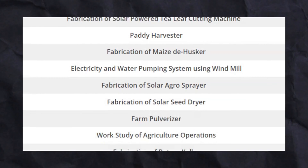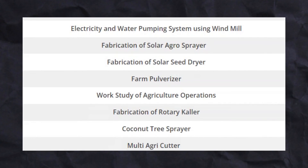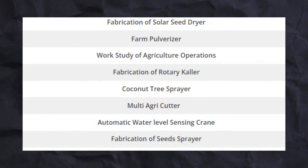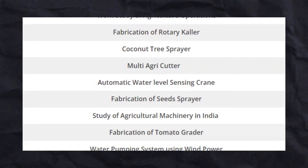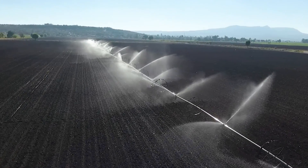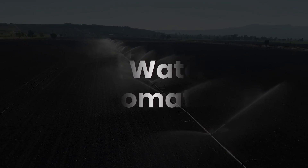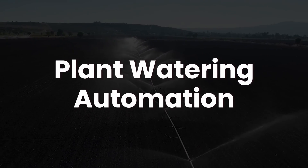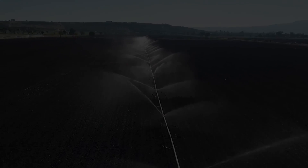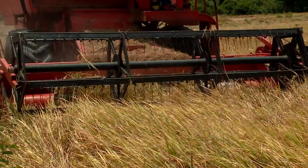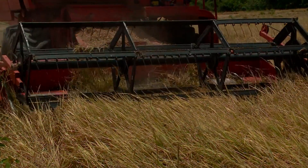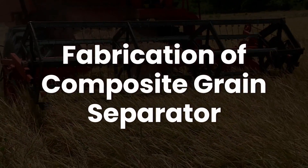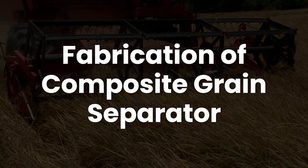At the end of the video, you will get the complete list of Agricultural Engineering project topics. Some examples include: Plant Watering Automation, Fabrication of Composite Grain Separator.